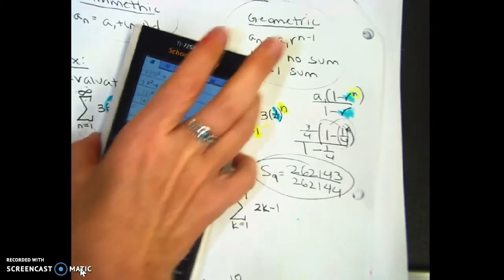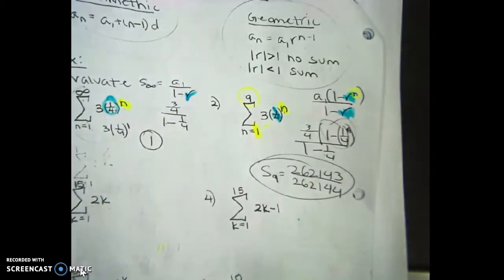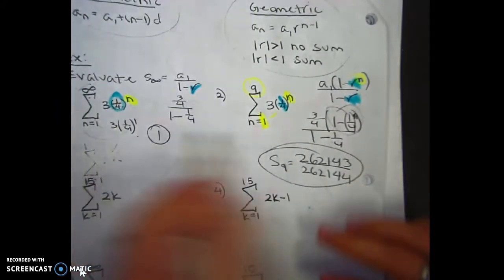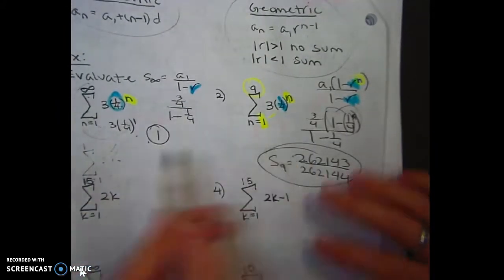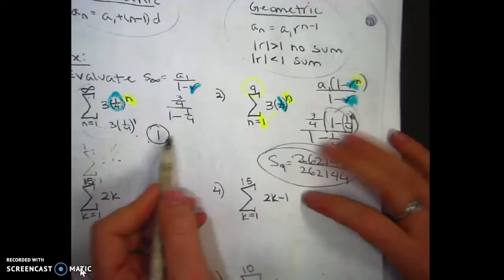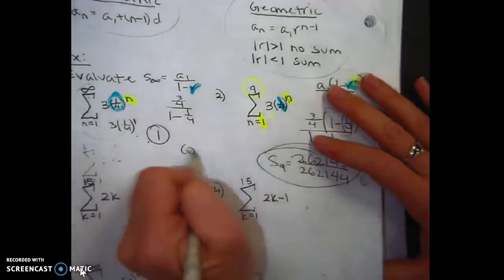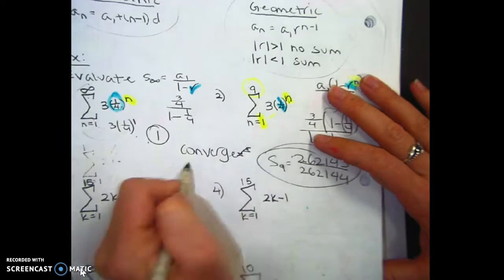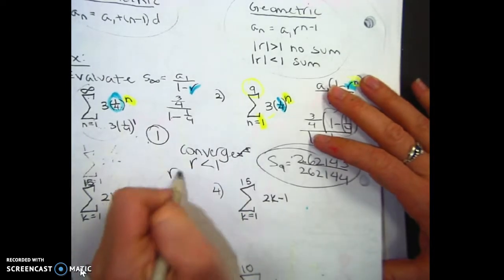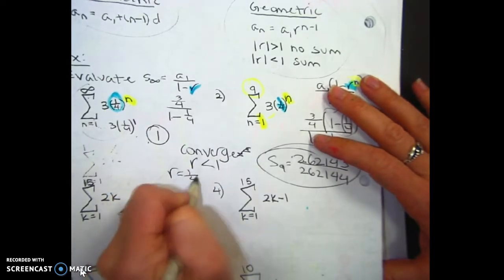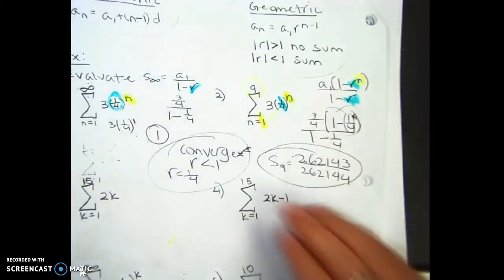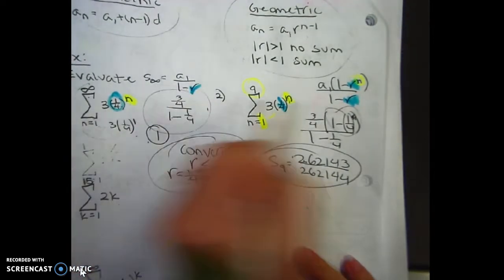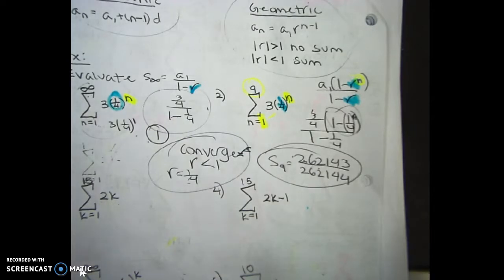I want to address the words converge and diverge a bit more. If I ask whether a series converges or diverges, you would write that it converges because the ratio is less than 1 — in this case the ratio is 1/4. If I ask you that question, I don't need the actual sum; I just need to know whether it can be done.